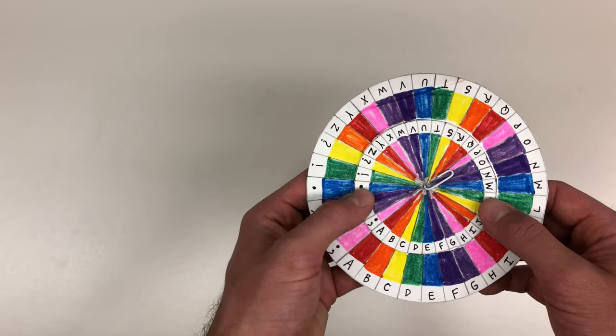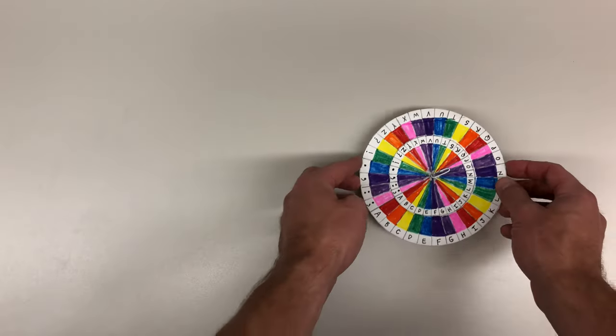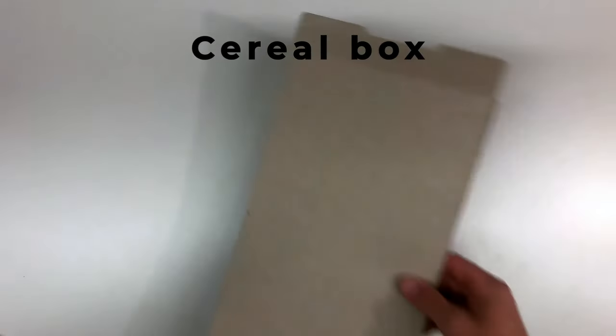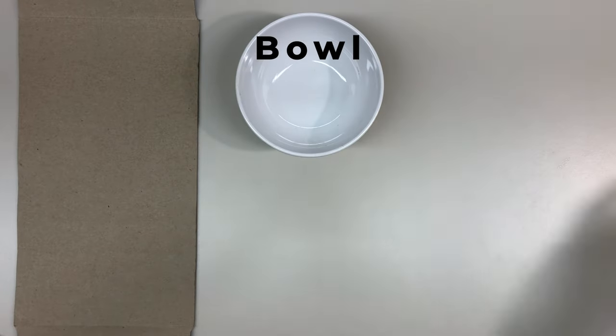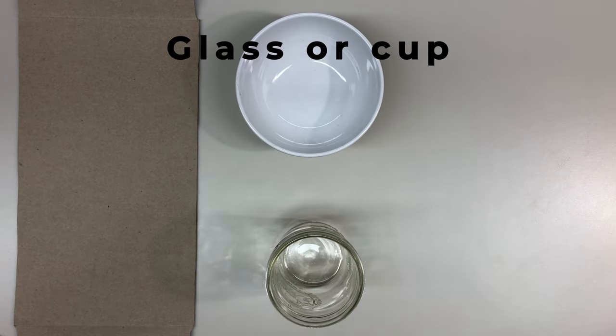Supplies: I suggest using a cereal box, it's a little thicker than paper, a bowl, a glass or a cup, scissors, a ruler, a pencil, and a paper clip.